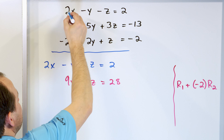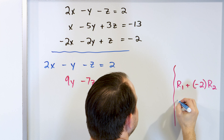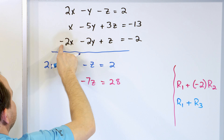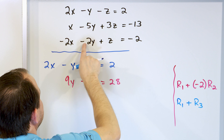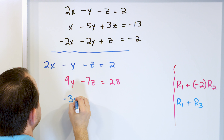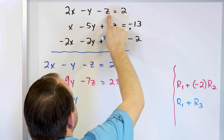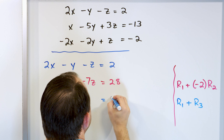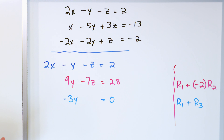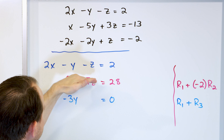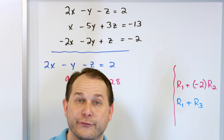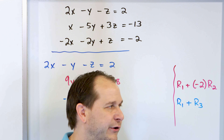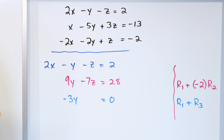The third row is easier - I have a 2x and a negative 2x, so I just take row 1 plus row 3: 2x plus negative 2x gives 0x. Negative 1y plus negative 2y gives negative 3y. The z terms: negative 1z plus positive 1z gives 0. The right side: 2 plus negative 2 gives 0. So the third equation is just negative 3y equals 0. Now I have three variables in row 1, two variables in row 2, one variable in row 3 - triangular form.